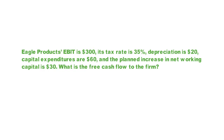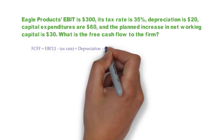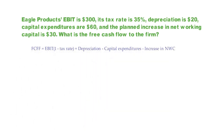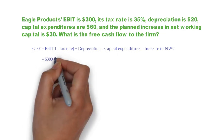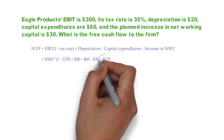Free cash flow to the firm is calculated from EBIT. Here's the formula for that. Once you plug in the numbers and solve the equation, you get $125. So the free cash flow to the firm is $125.